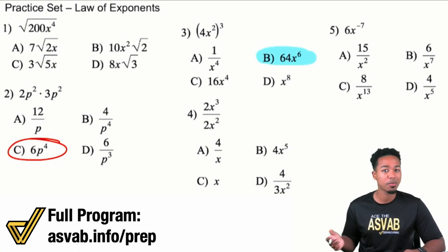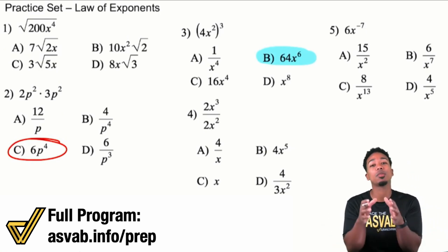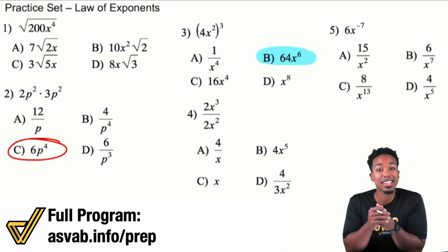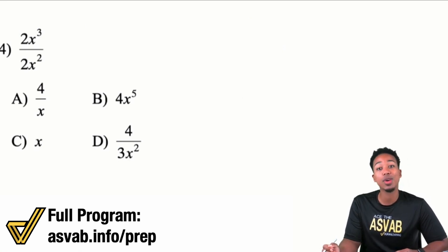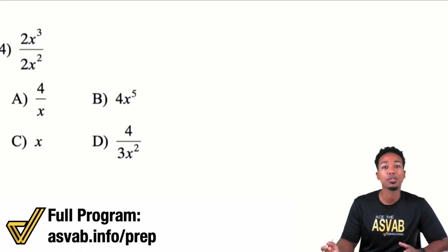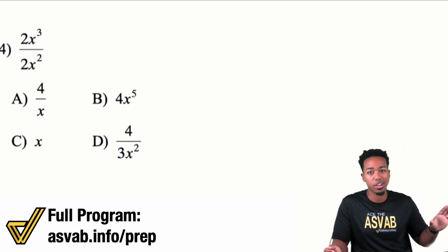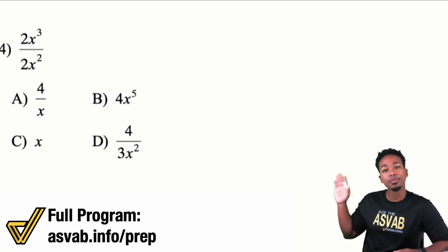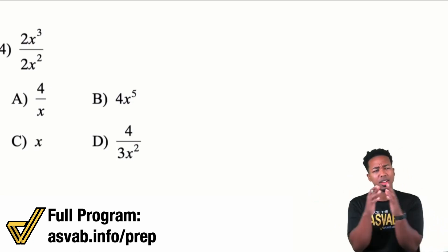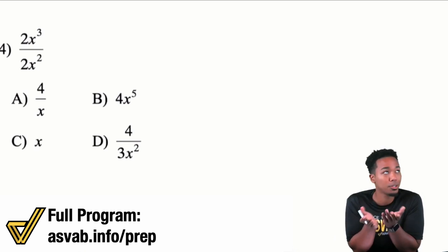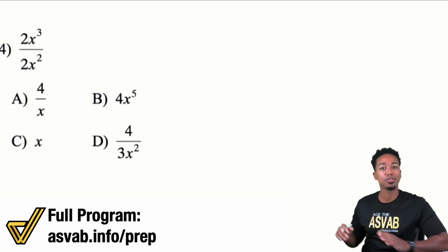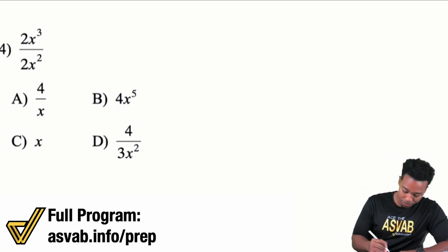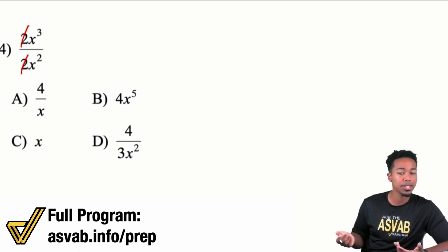Let's go to number four. We have two x cubed divided by two x squared. When it comes to dividing powers, handle the regular numbers as normal — divide them. But when it comes to the actual powers or exponents, you subtract those exponents. There's a nice pattern: when you're multiplying powers, you add the exponents; when you're dividing powers, you subtract the exponents. The twos here cancel out — two divided by two cancels out.